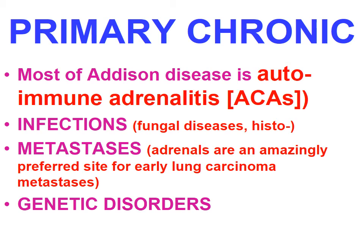Primary chronic adrenocortical insufficiency — Addison's disease — is autoimmune in 60 to 70 percent of cases. Infectious processes like fungal diseases, histoplasmosis, tuberculosis, or AIDS can also cause primary chronic adrenocortical insufficiency. Metastases are a preferred site — particularly early lung carcinoma or breast carcinoma metastases. Genetic disorders such as congenital adrenal hypoplasia are rare. The patient presents with insidious onset of weakness, fatigue, and lethargy.